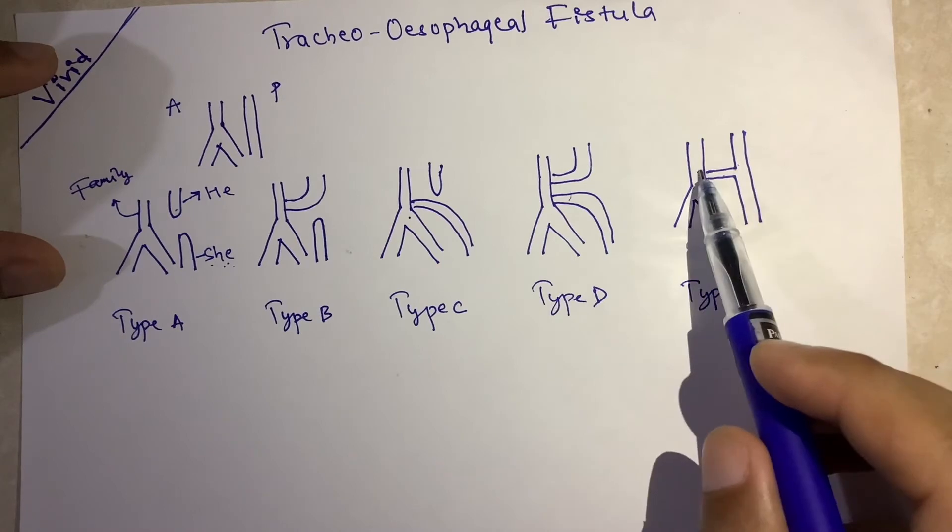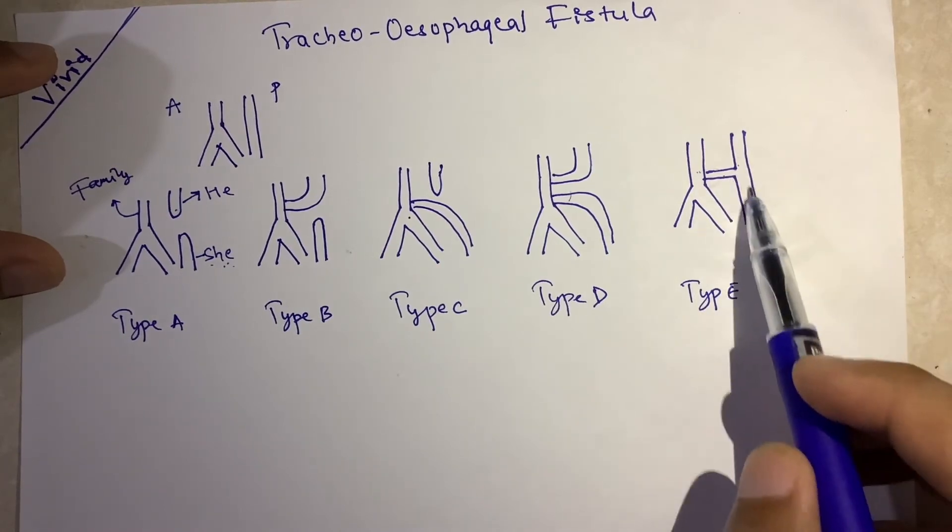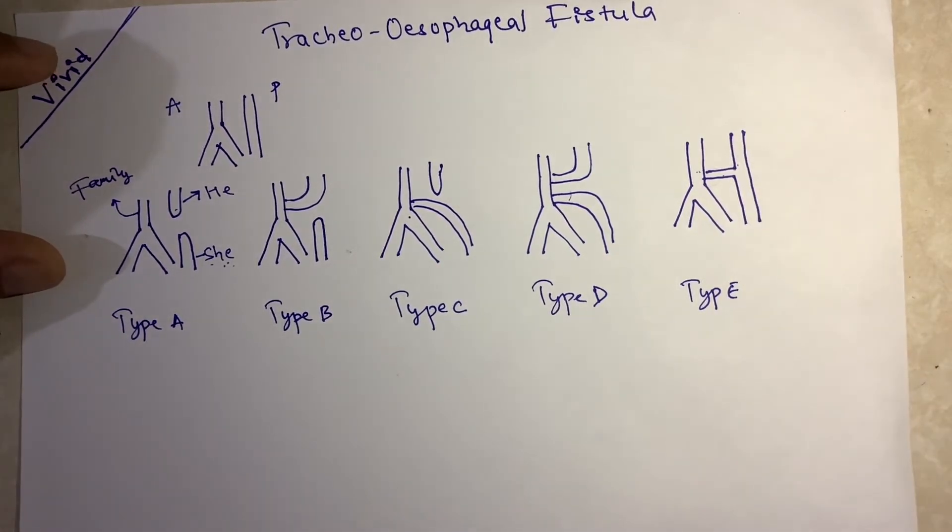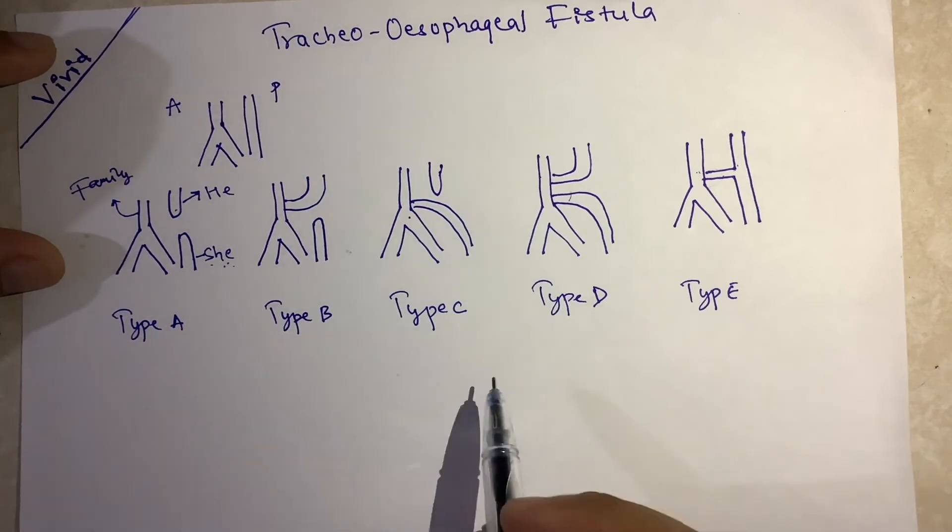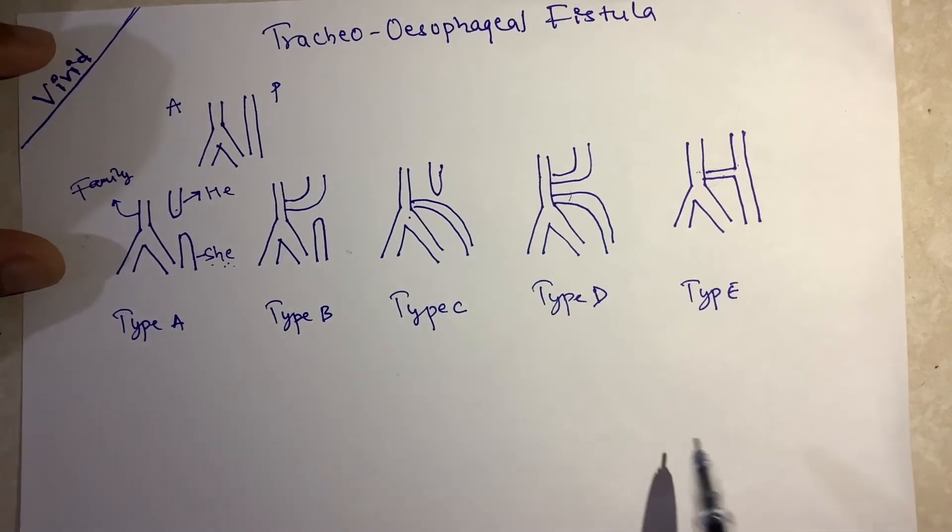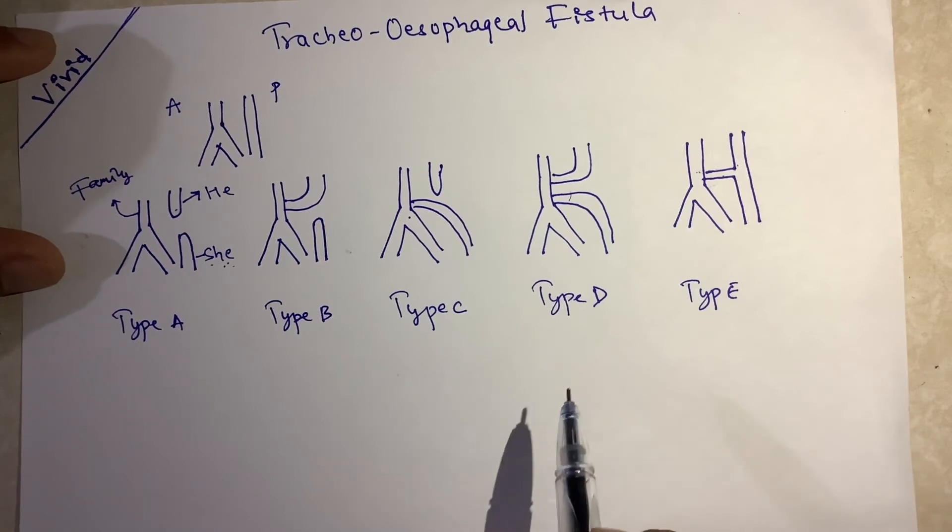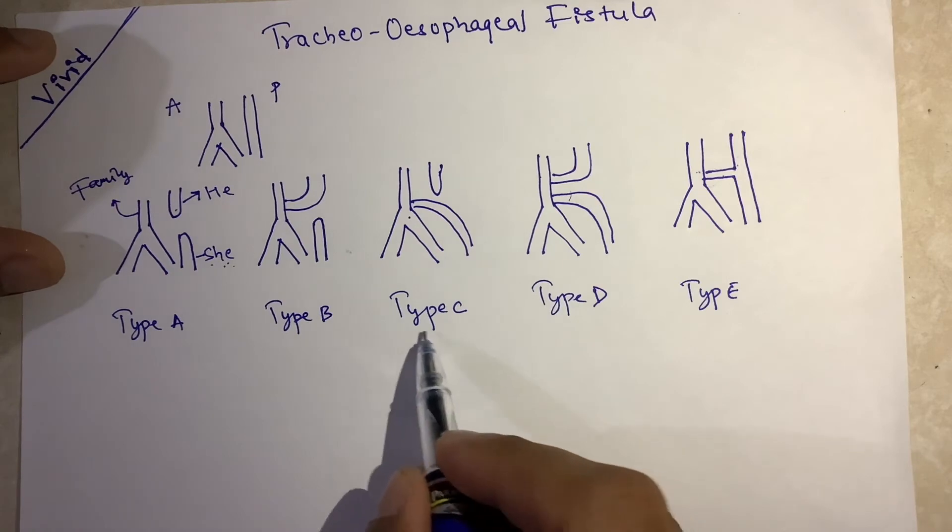In type E, they get married and become one, and they also make their family one. So they have good relationship with their family and they also have good relation with each other. Most frequently asked question is which type of tracheoesophageal fistula is common, and the answer is type C.